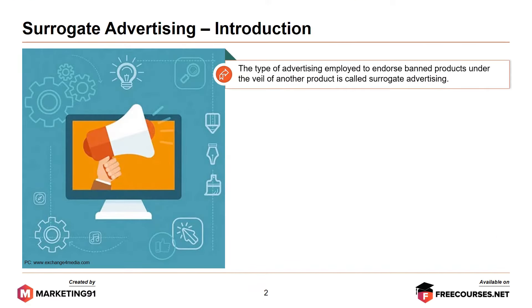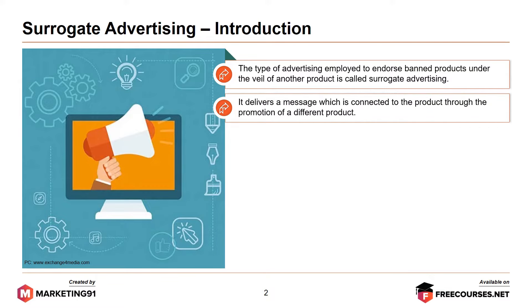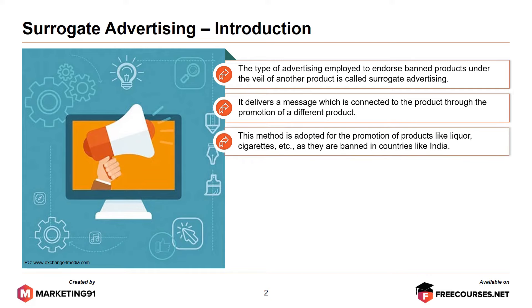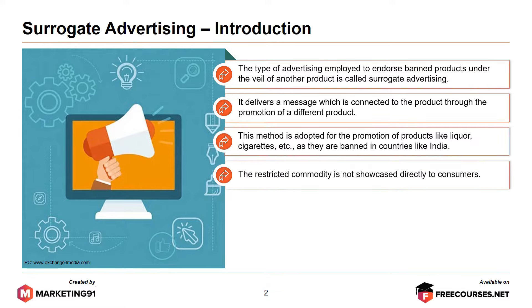The type of advertising employed to endorse banned products under the guise of another product is called surrogate advertising. It delivers a message which is connected to the product through the promotion of a different product. This method is adopted for the promotion of products like liquor and cigarettes, as they are banned in countries like India. The restricted commodity is not showcased directly to consumers.